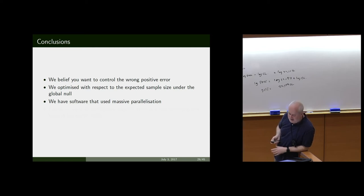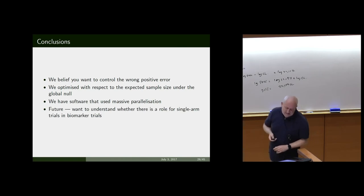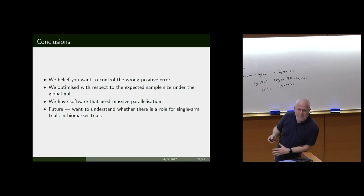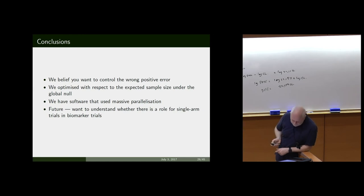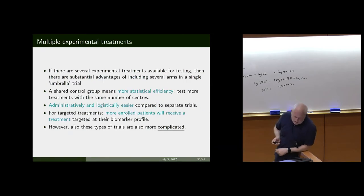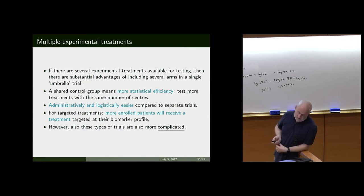We optimised this in terms of expected sample size — an optimization problem over 10 billion designs. Software is available via Colin. The same analysis we did for single-arm trials in drug development plans — deciding they weren't useful other than when there's no treatment effect — isn't quite clear whether it applies to biomarker trials given the many different ways of doing it. Now I'm going to look at multiple experimental treatments where we've got several experimental treatments available for testing.